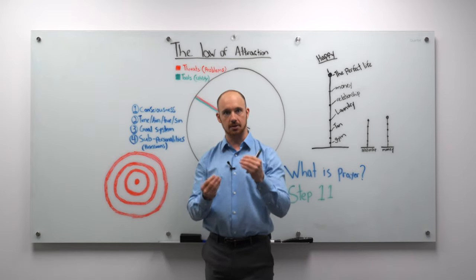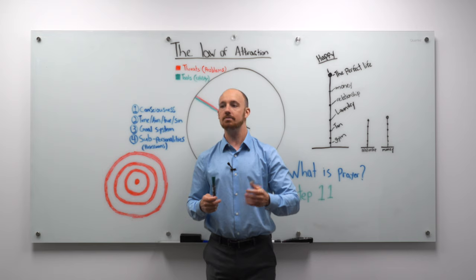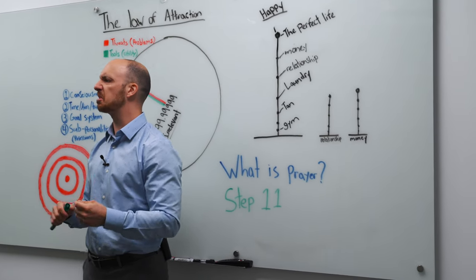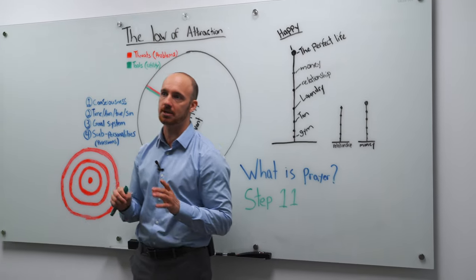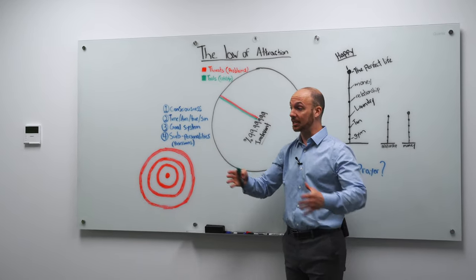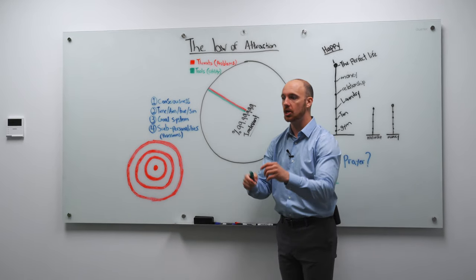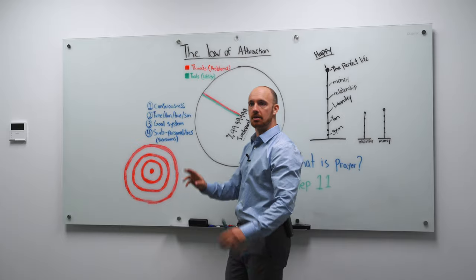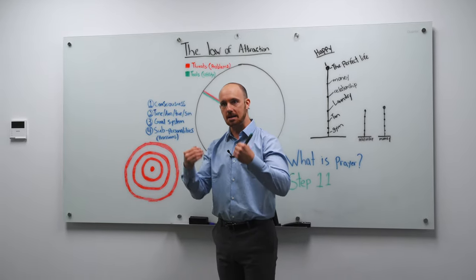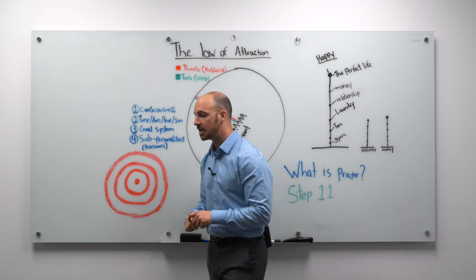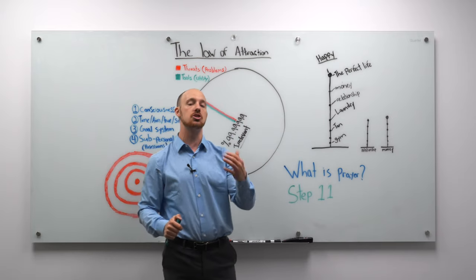And the weird part about consciousness though is that the bandwidth is severely limited. The human body, the brain essentially is producing or actually processing something like 400 billion bits of information per second. The bandwidth of consciousness is actually about 2,000 bits per second. So 99.99999% of everything that's going on, even in my immediate environment, is happening outside the scope of my consciousness.